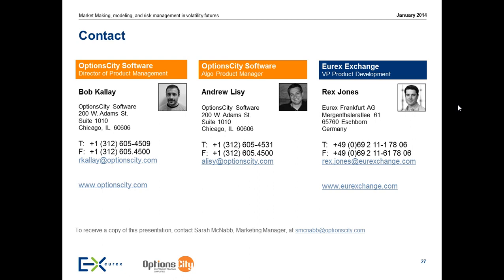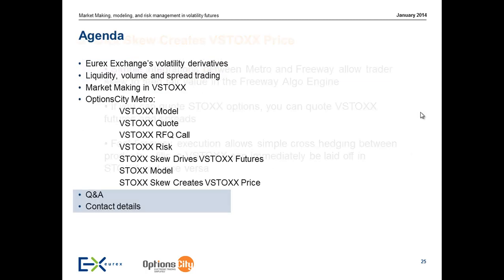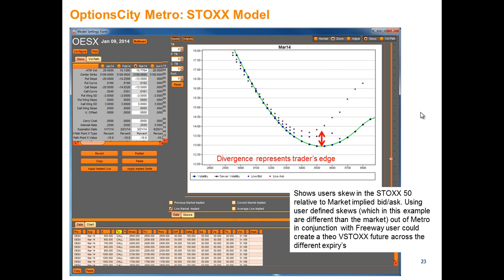Next question: can you elaborate on how the Stoxx skew gets fed into the V-Stocks pricing model — are you using the formula for the V-Stocks index or is there more to it? Basically, there's a very tight integration between the Metro screen showing your skew and the actual algo. The skew is on the server so the algo engine can directly access it. Once it accesses that, you have a volatility for each strike. Using that volatility per strike, you apply the direct math formula that Eurex uses to calculate V-Stocks — except using your own skews. This allows you to reflect your own view on fair volatility skew into your price for the V-Stocks futures.